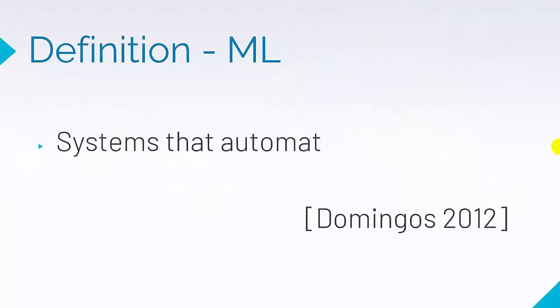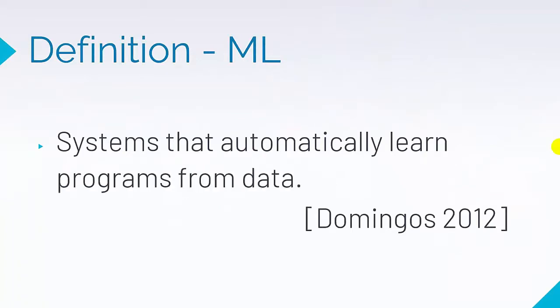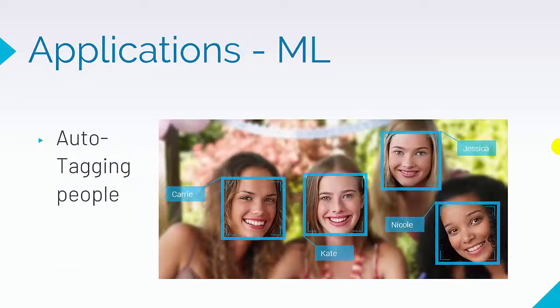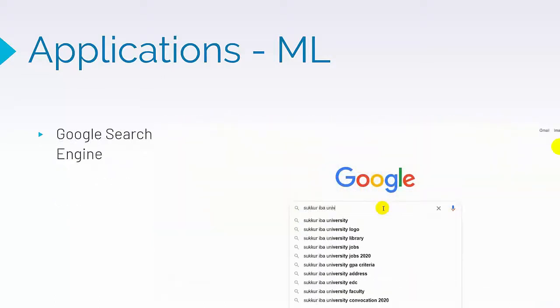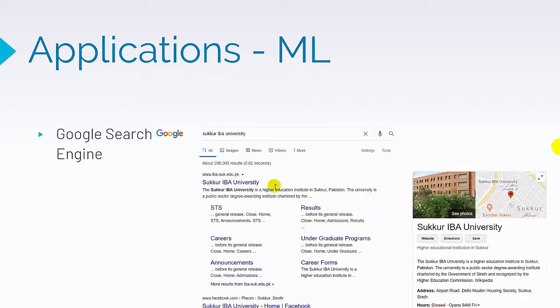So let's start with the basic definition of machine learning: systems that automatically learn programs from data. You just have to provide data and machine learning algorithms will automatically learn and start predicting. Machine learning applications include things like tagging objects and people inside photos — a clear machine learning application — like when you upload images on Facebook, it automatically starts tagging people from your friend list. Another application, the biggest example of all, is Google Search.